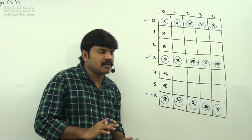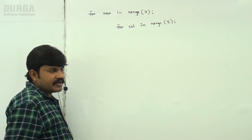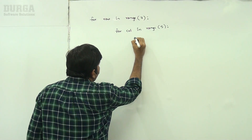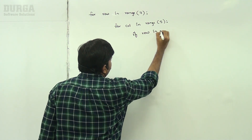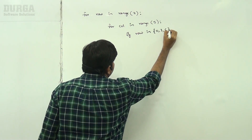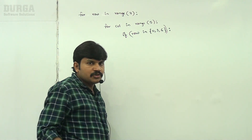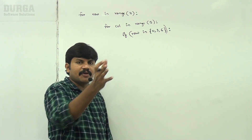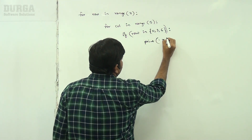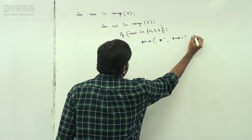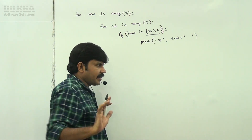In these rows, fill all stars — in every column place a star, no column restriction. So the code is: for row in range(7), for col in range(5), if row in [0, 3, 6], print star with end equal to space. That handles rows 0, 3, and 6.